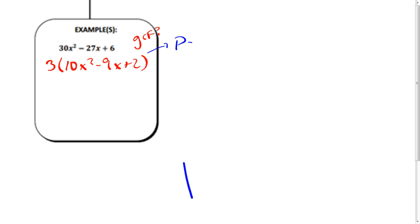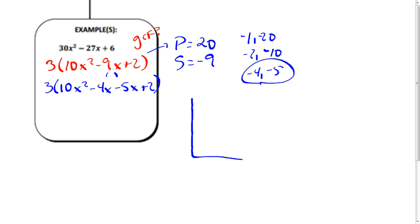Now notice what will end up happening. The original product, I would go 30 times 6 and get 180—there's a lot of numbers that multiply to 180. If I factor out the GCF, now my product is 10 times 2, which is 20—the first term times the last term. My sum is going to be negative 9, so now instead of trying to find pairs out of 180, I'm only finding pairs out of 20. It's positive, but my sum is negative, so both numbers are going to be negative. I'm going to split this middle term into 10x squared minus 4x minus 5x plus 2.